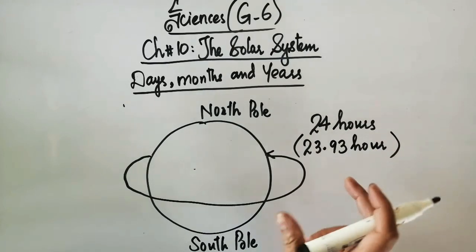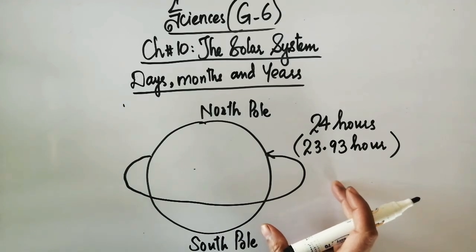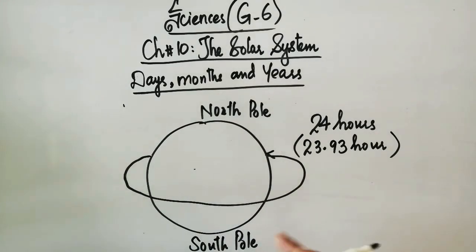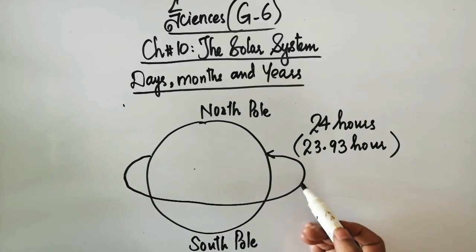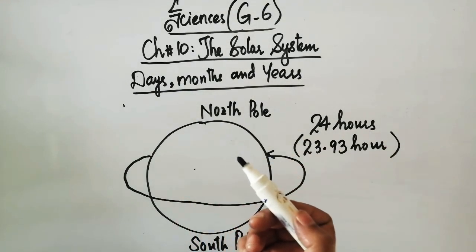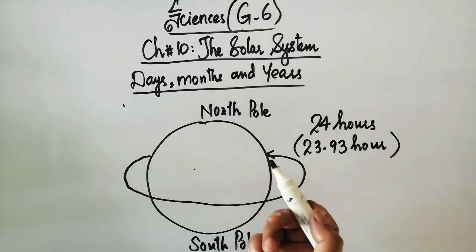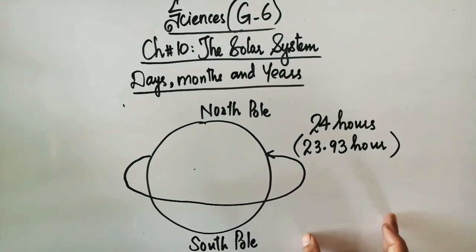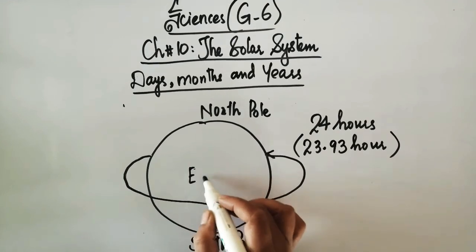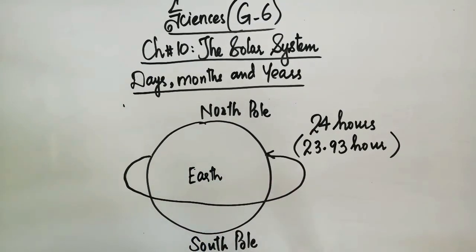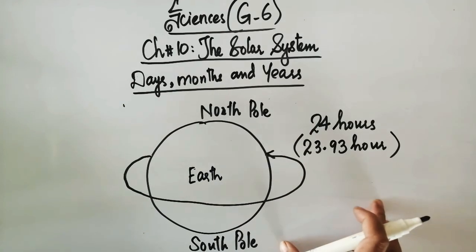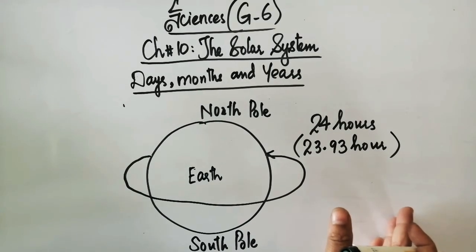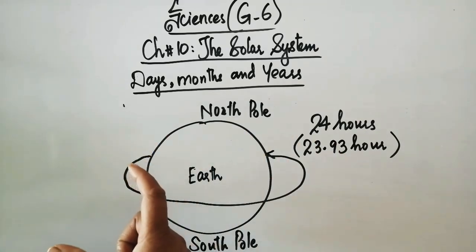So observe from the earth, the sun appears to move across the sky. In fact this motion is due to the earth spinning on its axis. Actually, the Earth is spinning on its axis, not the sun. The sun is stationary, but we think that the sun is moving and the Earth is stationary.